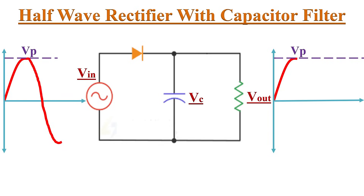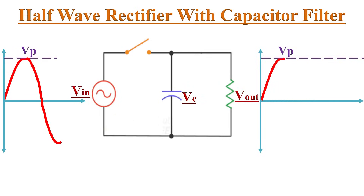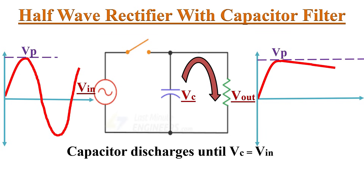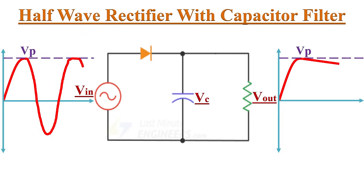After the input voltage reaches its peak, the input voltage begins to decrease. As soon as the input voltage is less than Vp, the voltage across the capacitor exceeds the input voltage. Because of this, the voltage at the cathode of the diode exceeds its anode voltage, so the diode becomes reverse biased and acts as an open switch. During this period the charge across the capacitor discharges through load resistor RL. The capacitor keeps discharging until the capacitor voltage Vc equals the input voltage Vin.